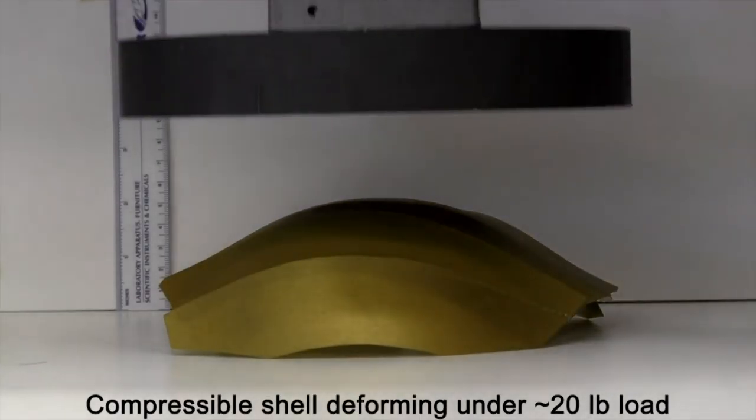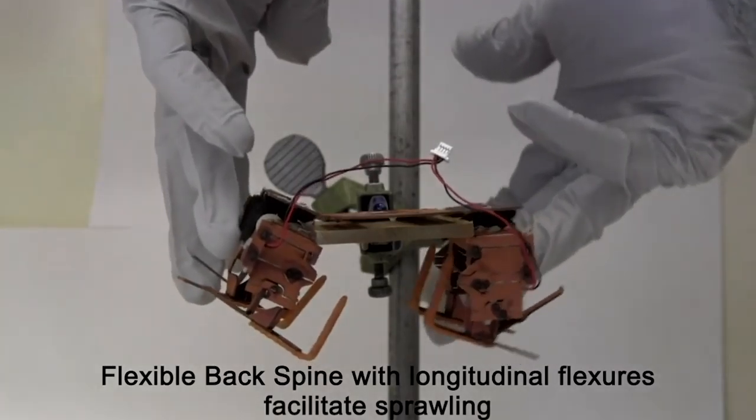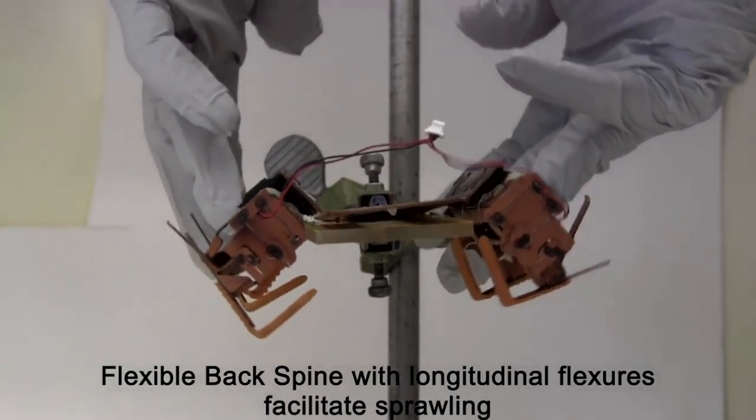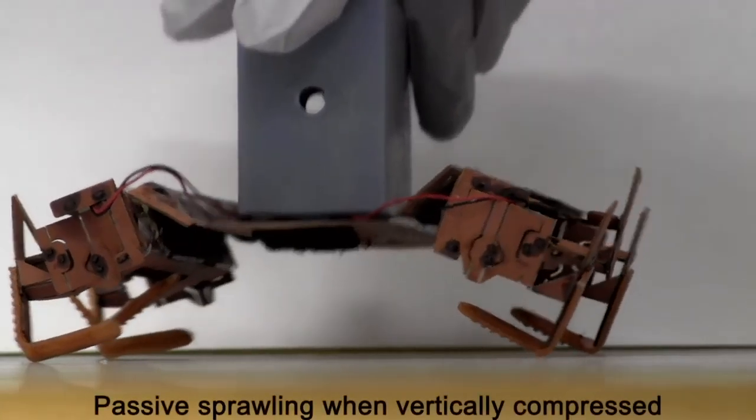Not only can its carapace, that's a fancy word for shell, be crushed, but so can its motorized body thanks to a hinged spine and these clever legs that just keep on trucking no matter how tight the squeeze.